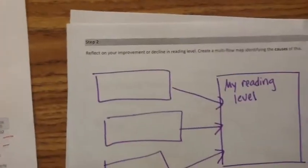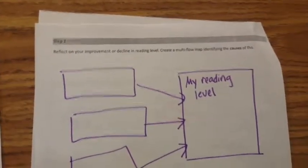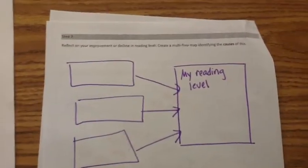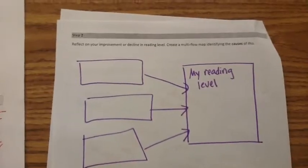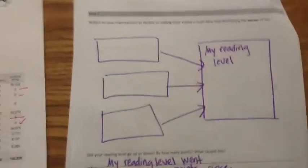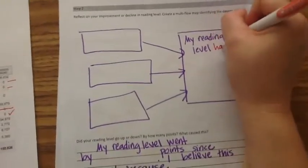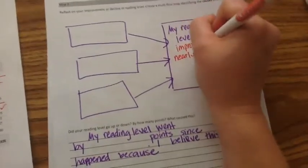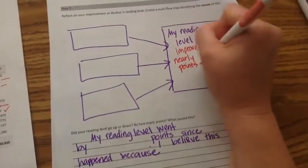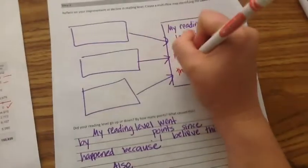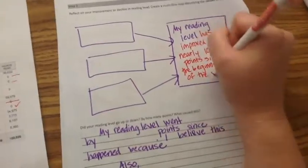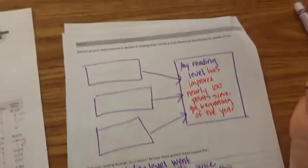Step two asks us to reflect on our improvement or decline in reading level. We're going to create a multi-flow map identifying the cause of this. Here's the frame for my multi-flow map. I see that I've created just one side because I'm only identifying the causes. And I'm going to say my reading level has improved nearly 100 points since the beginning of the year. And then I'm going to think of three reasons why my reading level has gone up by this many points.